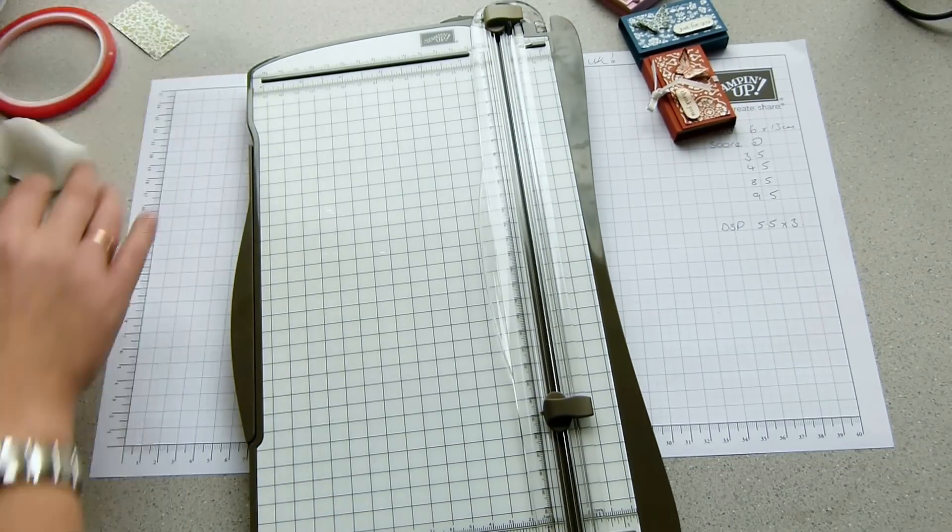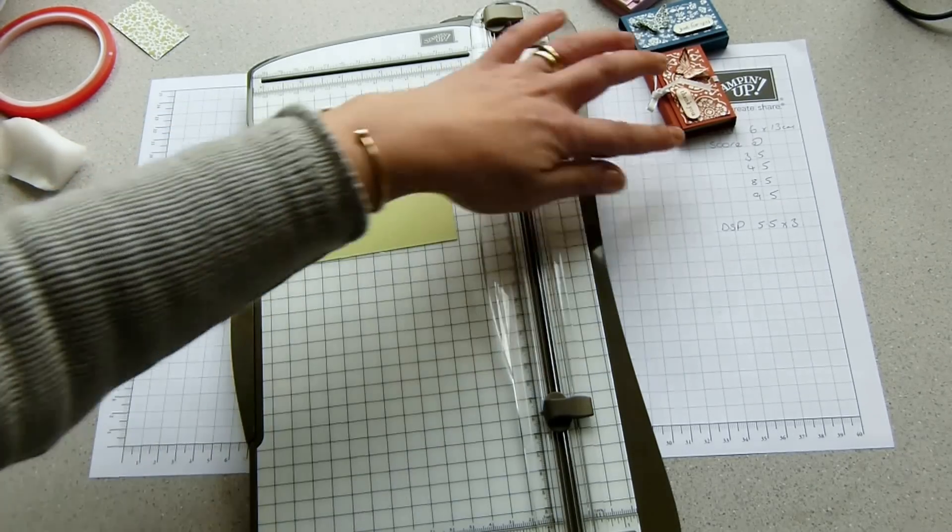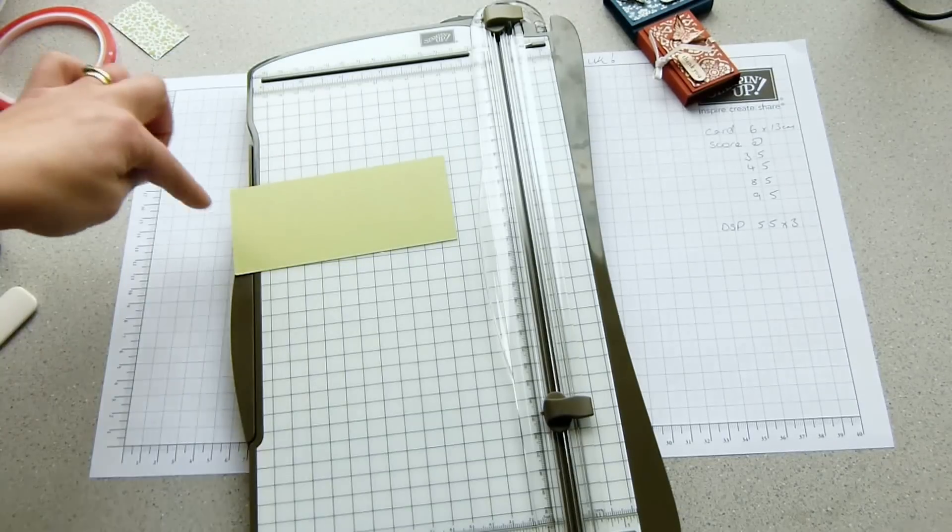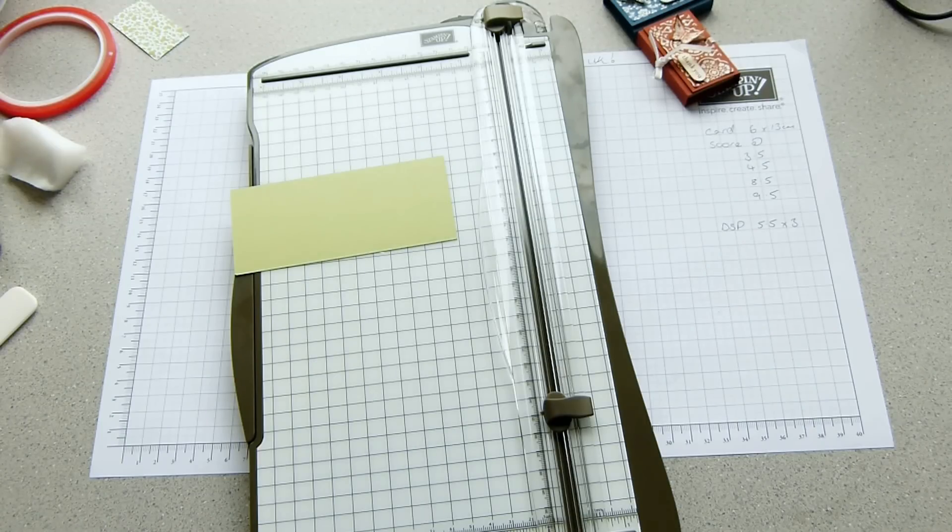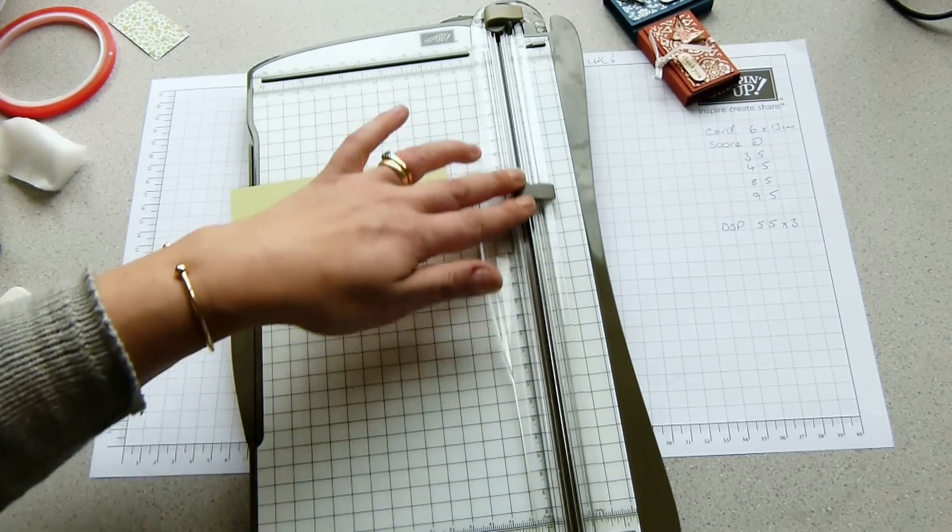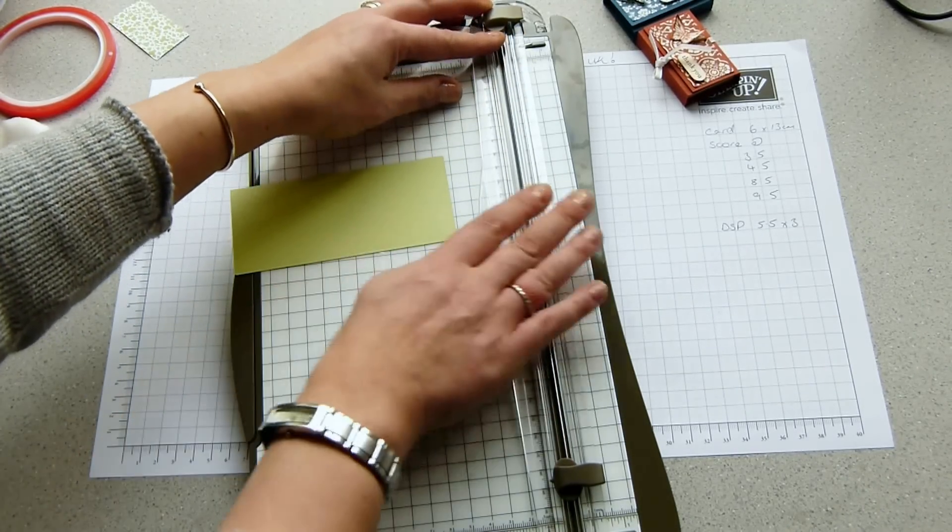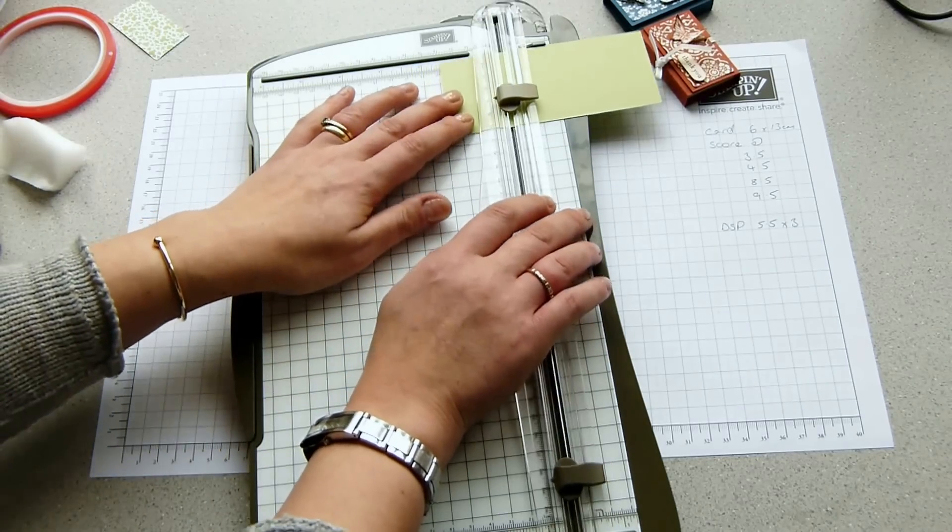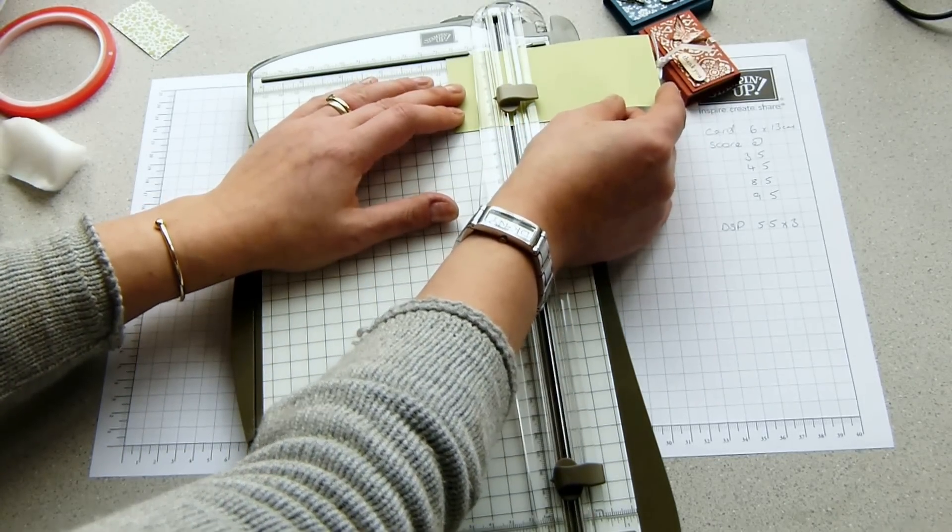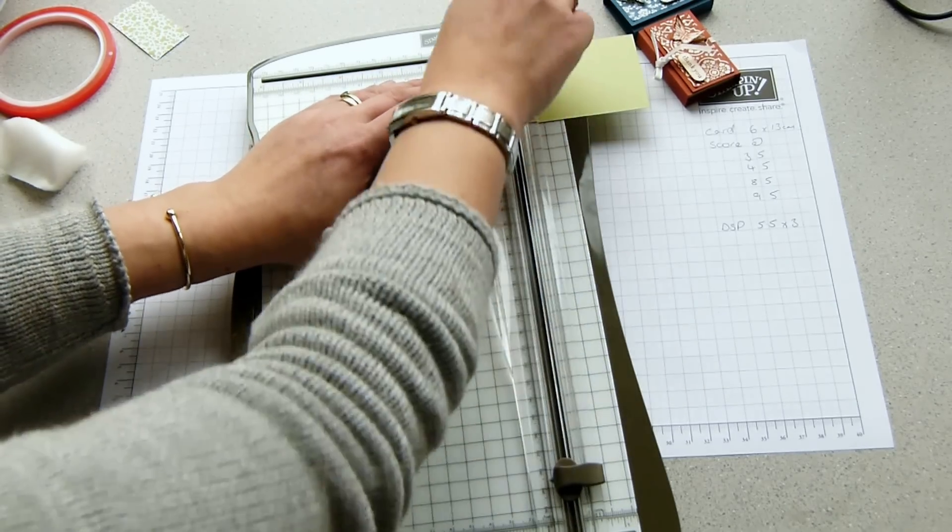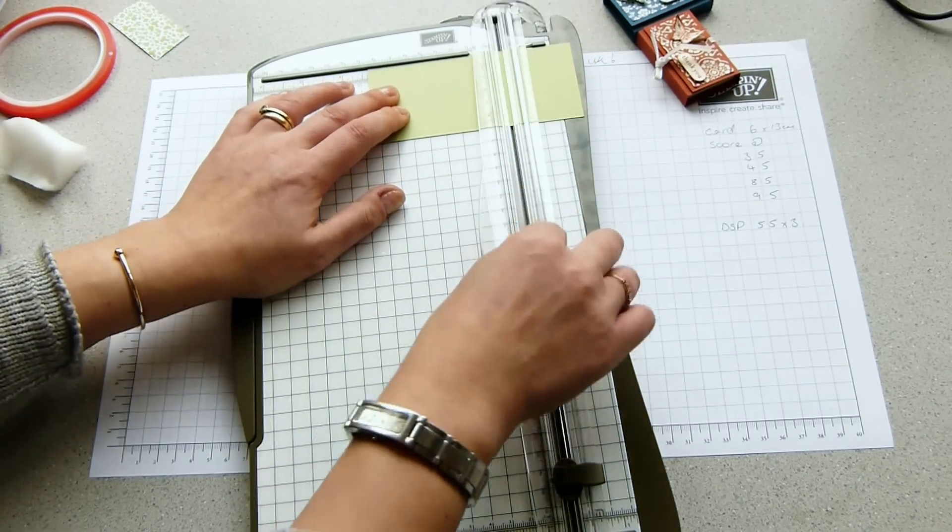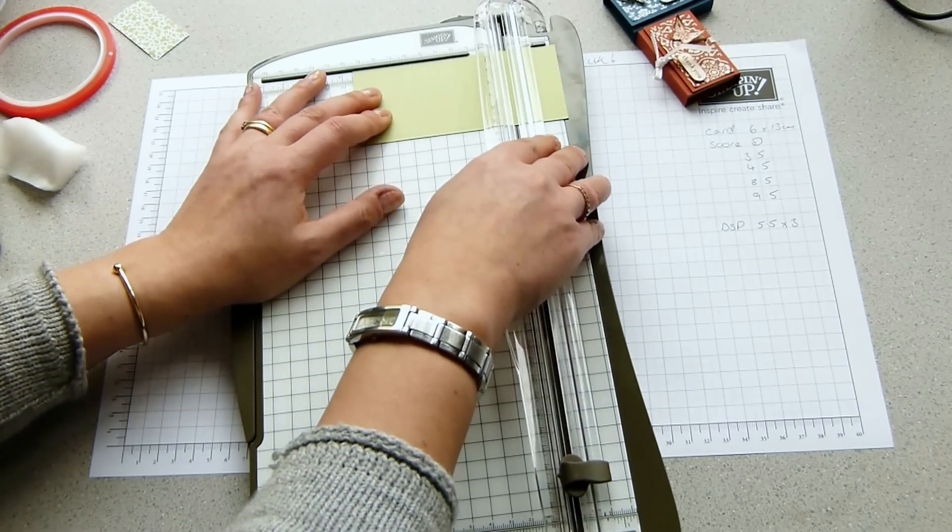I've got here some Certainly Celery cardstock, which measures six centimeters by 13 centimeters. I wanted to work in centimeters today rather than inches. The Simply Scored tool, I don't have the centimeter plate. But this trimmer here, this is a Stampin' Up trimmer, has your cutting blade and the scoring blade as well. So what I'm going to do is I'm going to score it at three and a half centimeters, four and a half centimeters, eight and a half centimeters, and nine and a half centimeters.